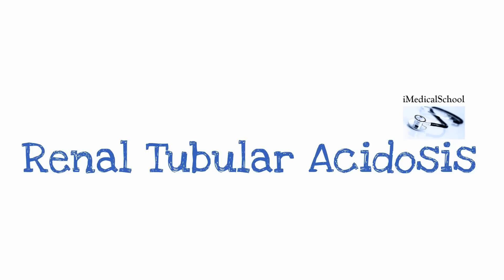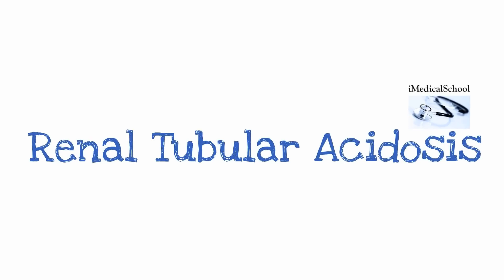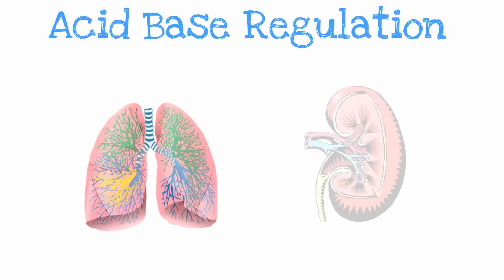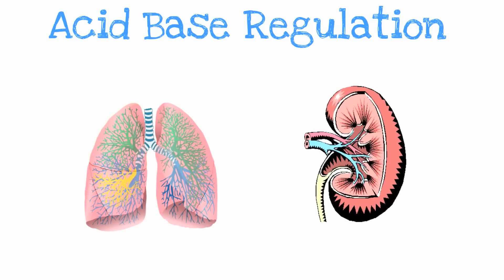Hey, this is Dr. K from iMedicalSchool, and today we are going to talk about renal tubular acidosis. As the name sounds, renal tubular acidosis is when the serum pH becomes more acidic due to changes in the normal function of the kidneys.